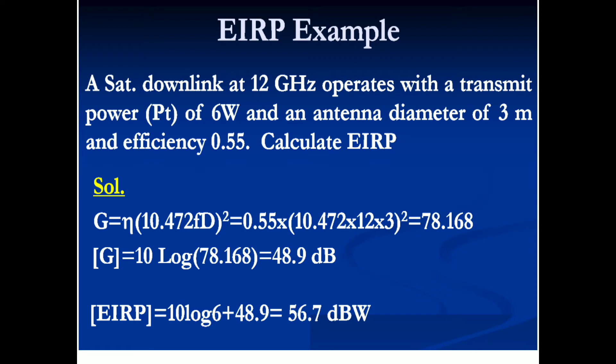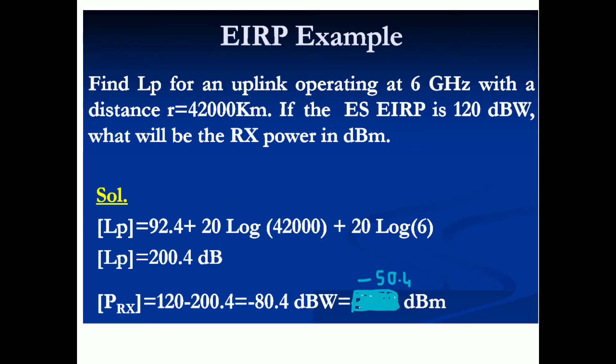Let's solve a problem to calculate EIRP when we are given the transmitting power and the dimensions of an antenna. First, we calculate the gain of the transmitting antenna, then EIRP = 10·log(transmitting power) + 10·log(gain). Substituting the values, we get EIRP as 56.7 dBW. If the problem asks for the value in dBm, we simply add 30 to convert from dBW to dBm.